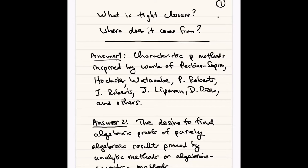Let me go to my first answer: where did it come from? Through the decade of the 70s, characteristic P methods started coming into commutative algebra. They already existed in number theory for a long time — for instance, the proof of irreducibility of cyclotomic polynomials. But really in commutative algebra, the fundamental paper of Peskine and Spiro, which proved some of the homological conjectures by reducing them to characteristic P, was a crucial step.